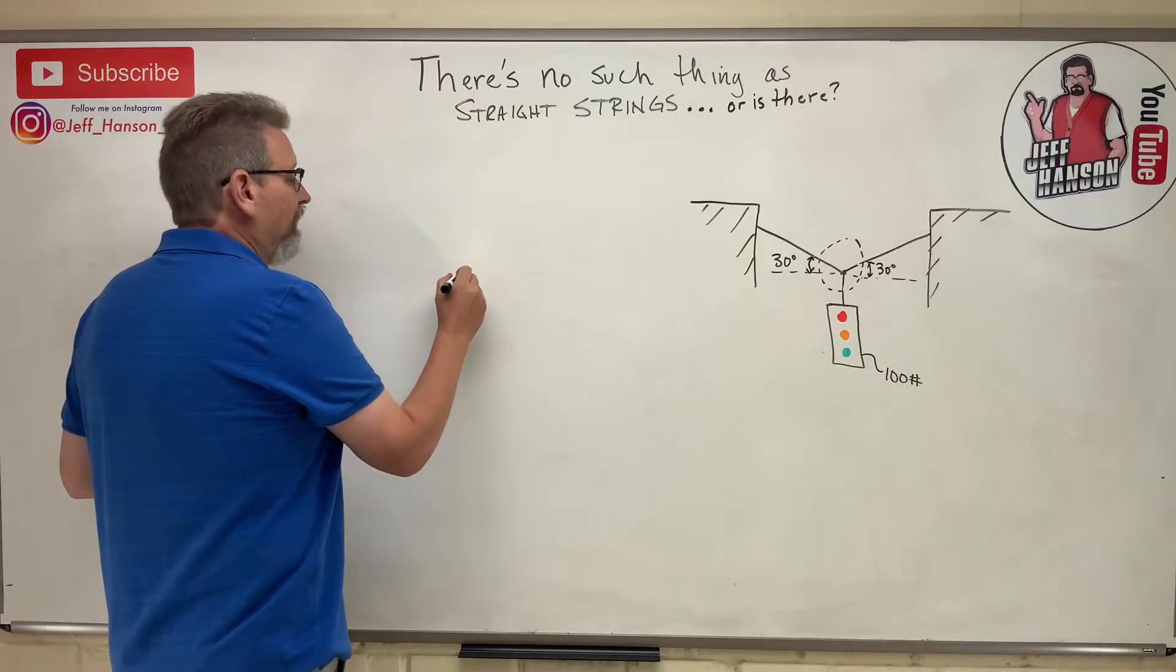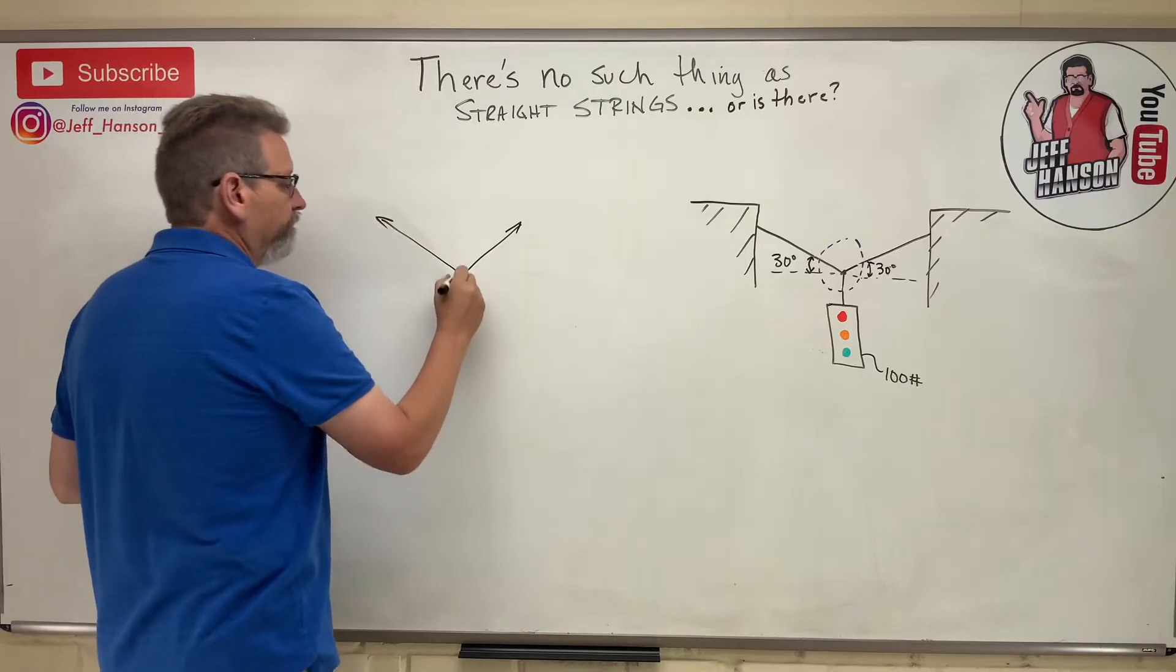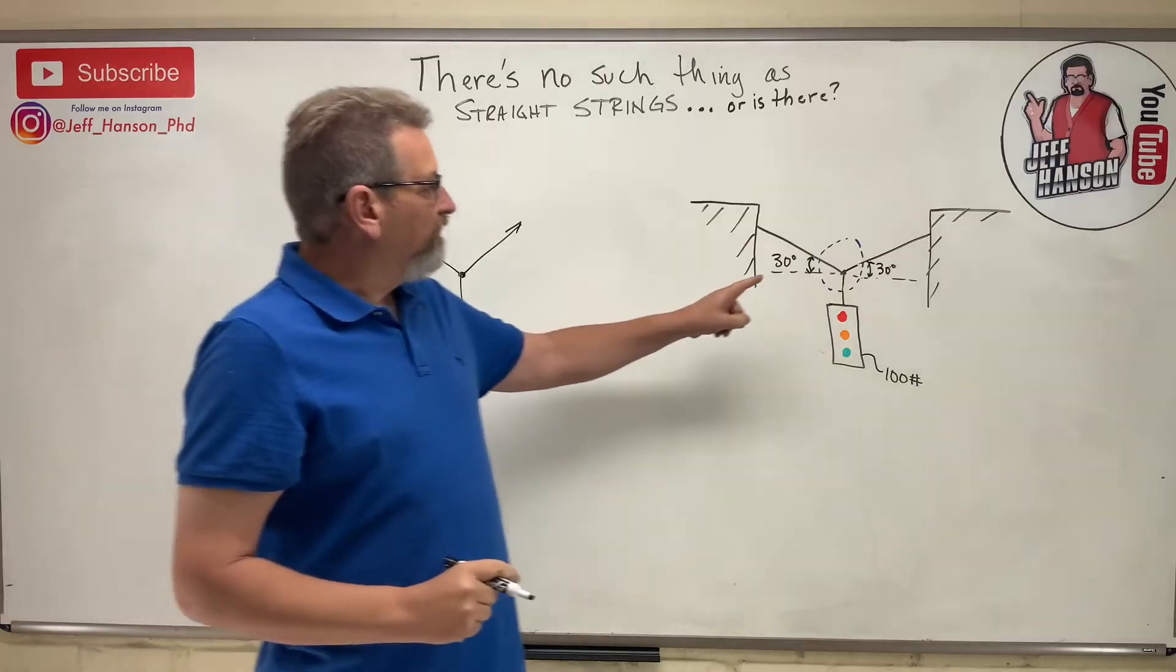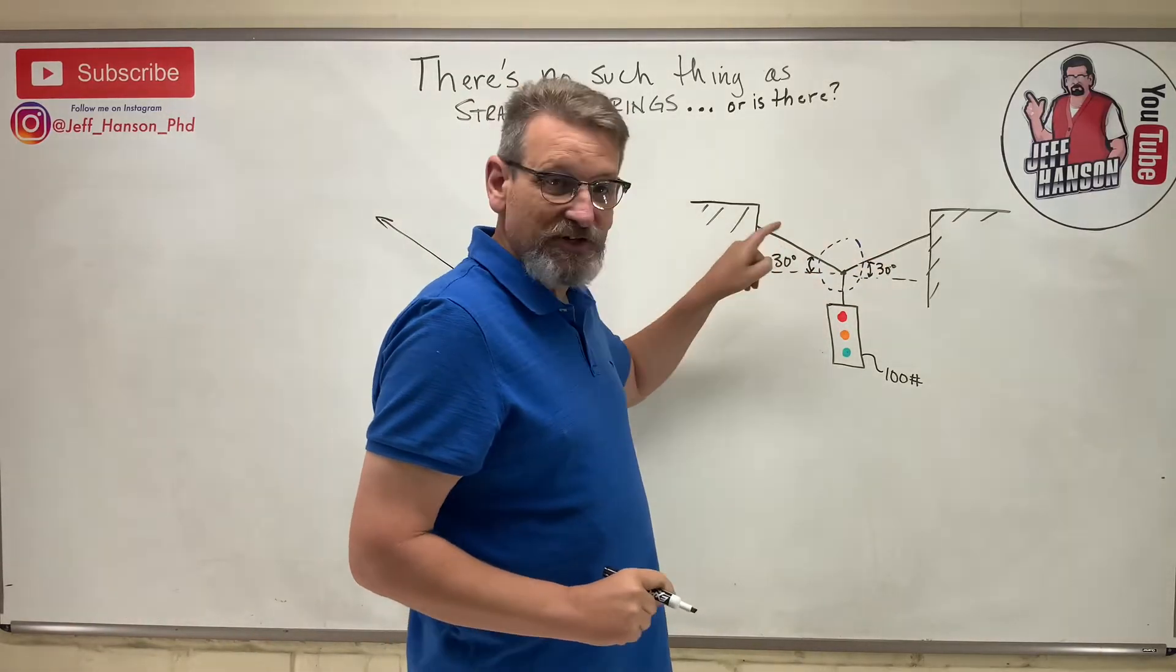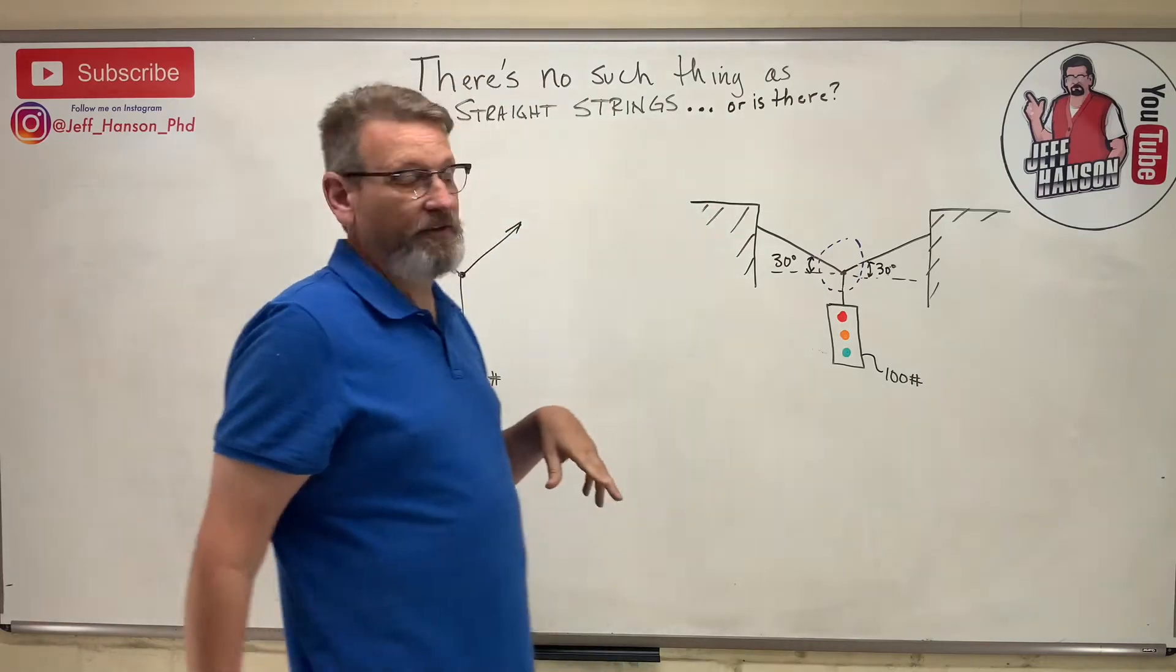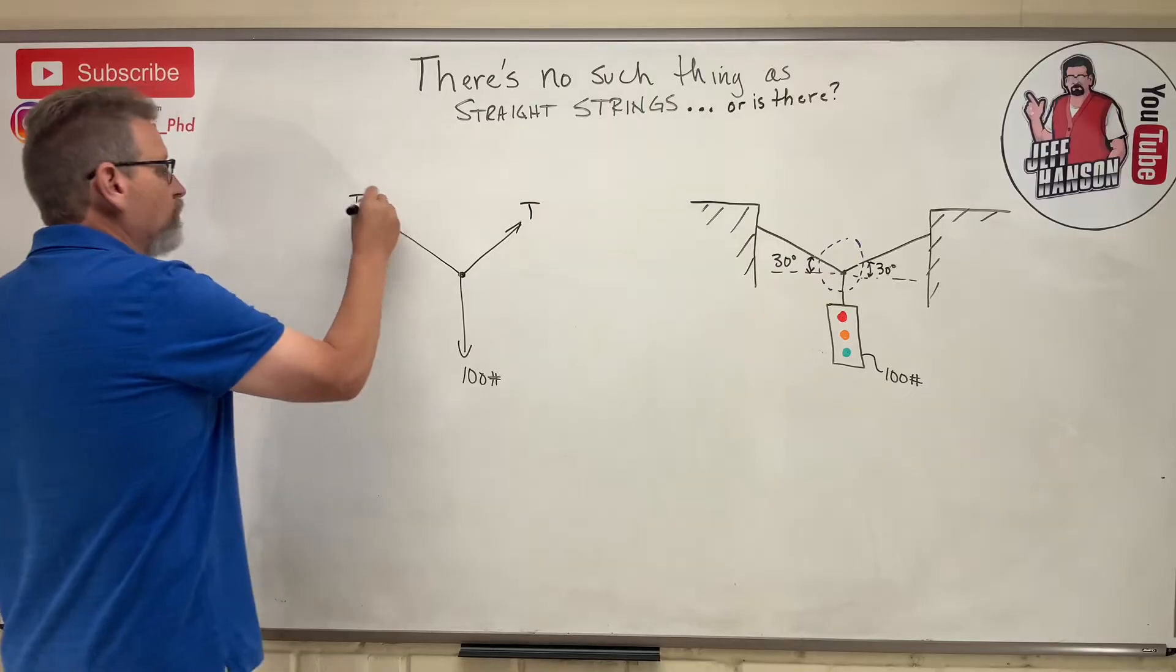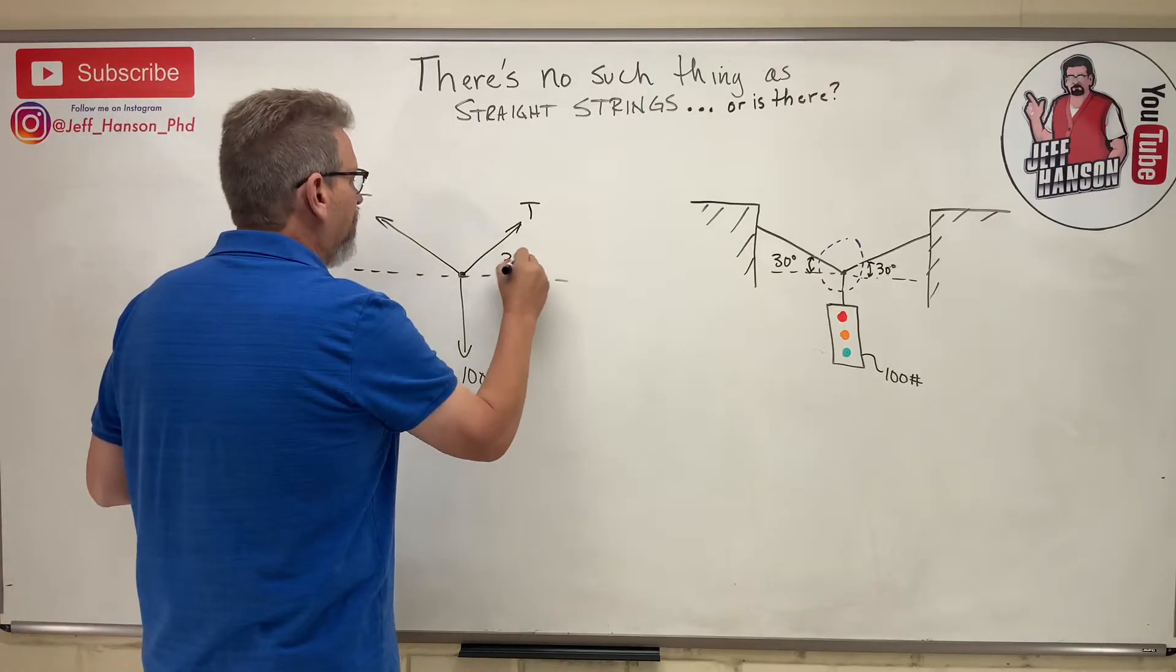Let's look at that joint. There's a hundred pounds pulling down and would you agree that this is a symmetric system? So the tension in this rope is the same as the tension in that rope. I'll call this T and I'd call this T as well, with my two angles: 30 degrees and 30 degrees.